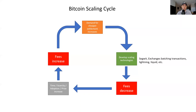Next time around this cycle, when scarcity gets even lower, time continues to press on, and adoption continues to grow, fees may not necessarily increase as much with the same amount of activity. So activity could go up 10x, but maybe fees will only go up 2x from where they were back in 2017.